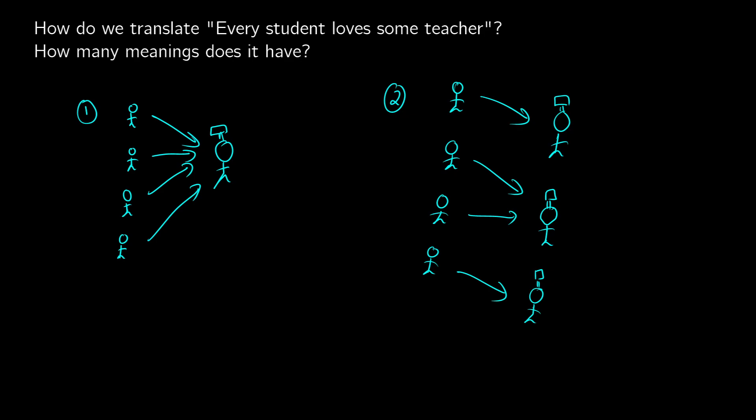So in the left one, the existential, we'll use y for the object here, there exists a teacher that all students like. And on the right side, for every student out there, there is some teacher that the student likes. So in our translation, we're going to have a different ordering of our two quantifiers based on our two quantified NPs, every student and some teacher.